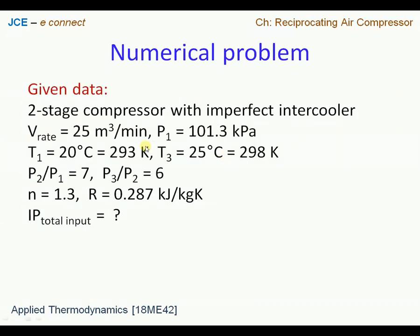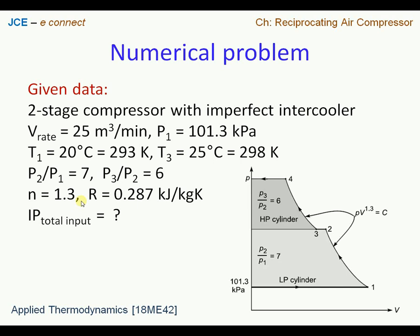Listing the given data: it is a two-stage compressor with volume flow rate and atmospheric pressure given as inlet data. The pressure ratio for stage 1 is 7 and for stage 2 is 6. The polytropic index n = 1.3. We are asked to find the total indicated power, which equals indicated power for the low pressure cylinder plus indicated power for the high pressure cylinder.